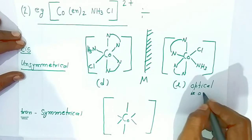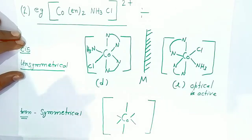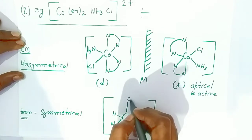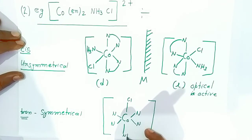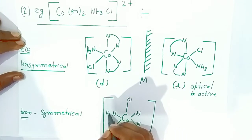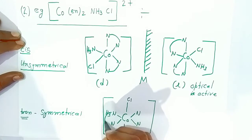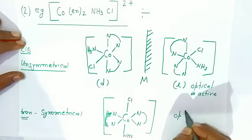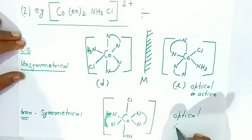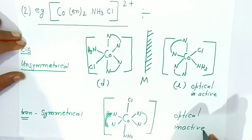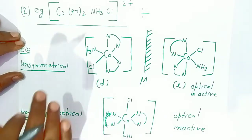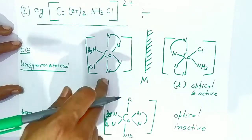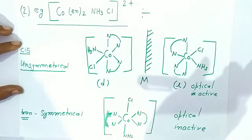For the trans structure, there is symmetry present in the complex. When ammonia is written on this side, you find that symmetry exists, so this trans form is optically inactive. It will not form any optical isomers. This is how you write the dextro and levo isomers for this type of complex.